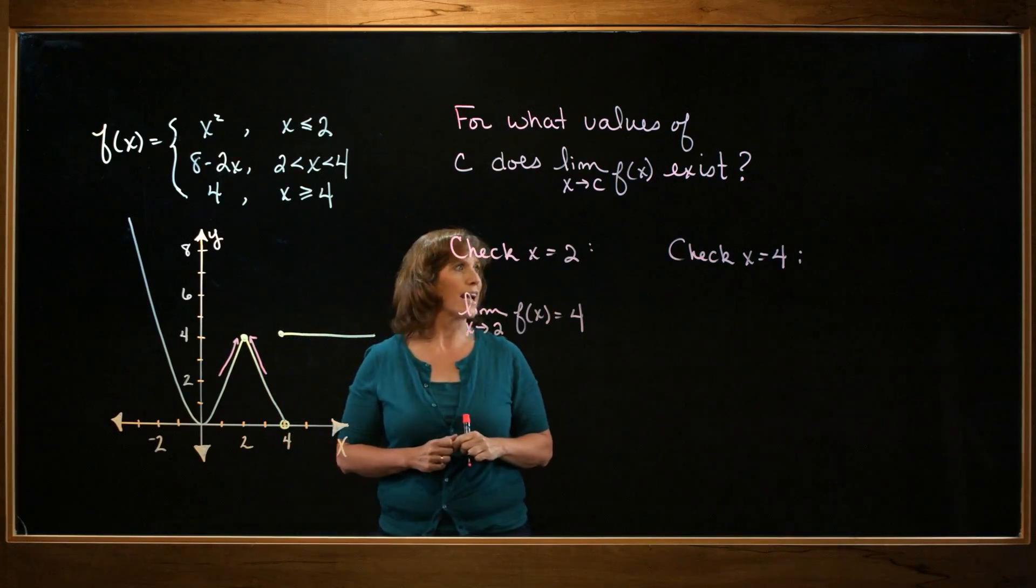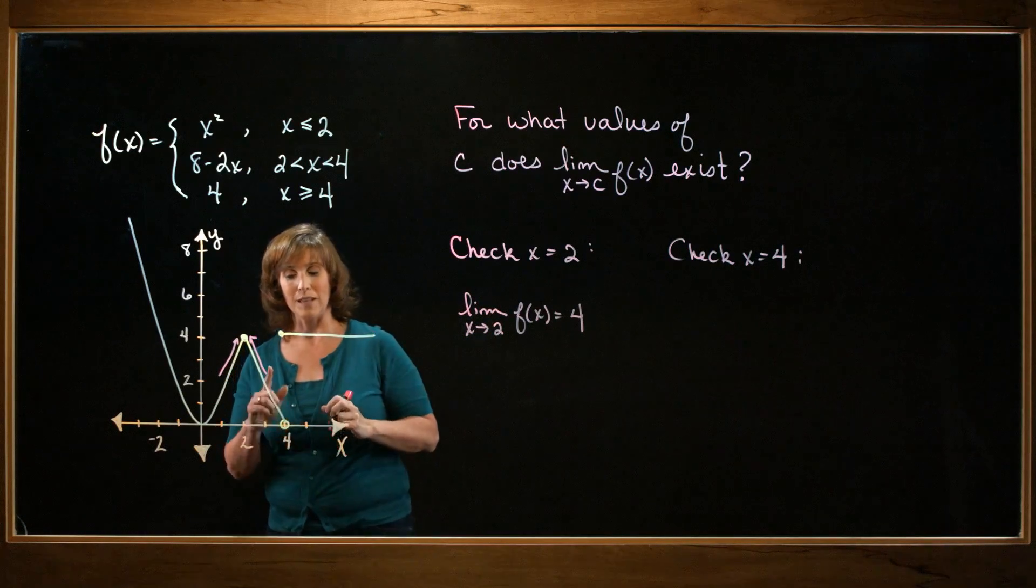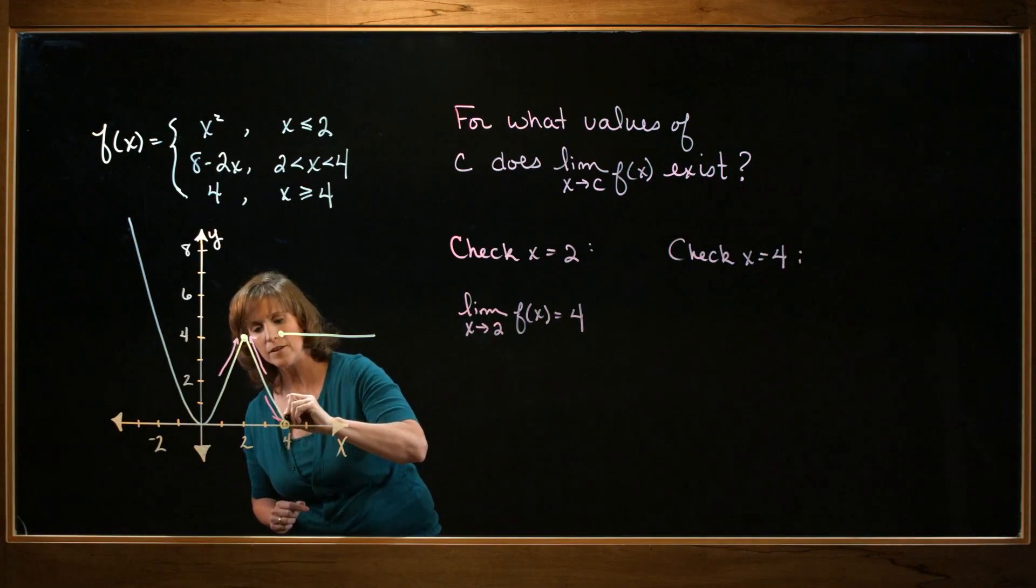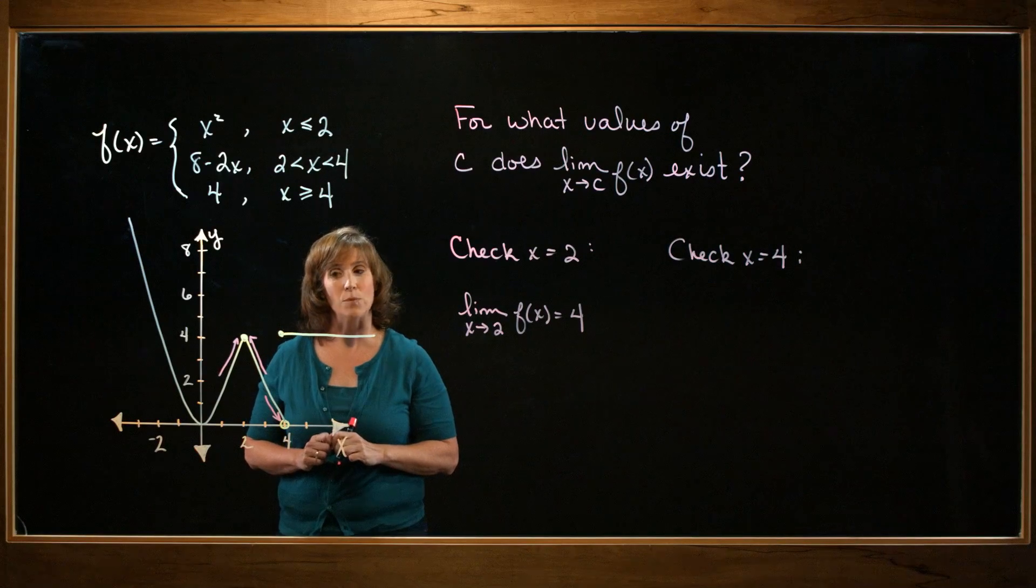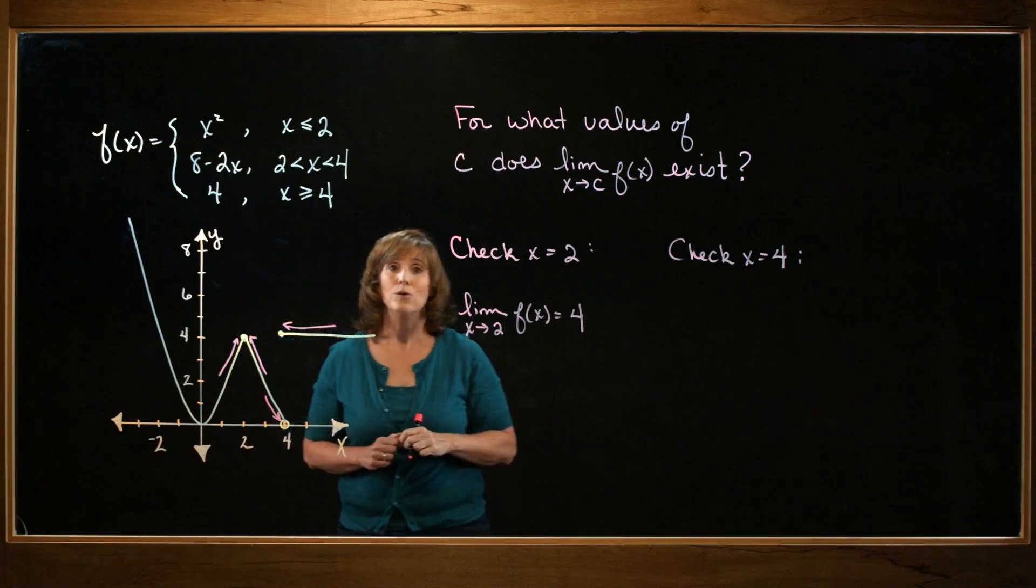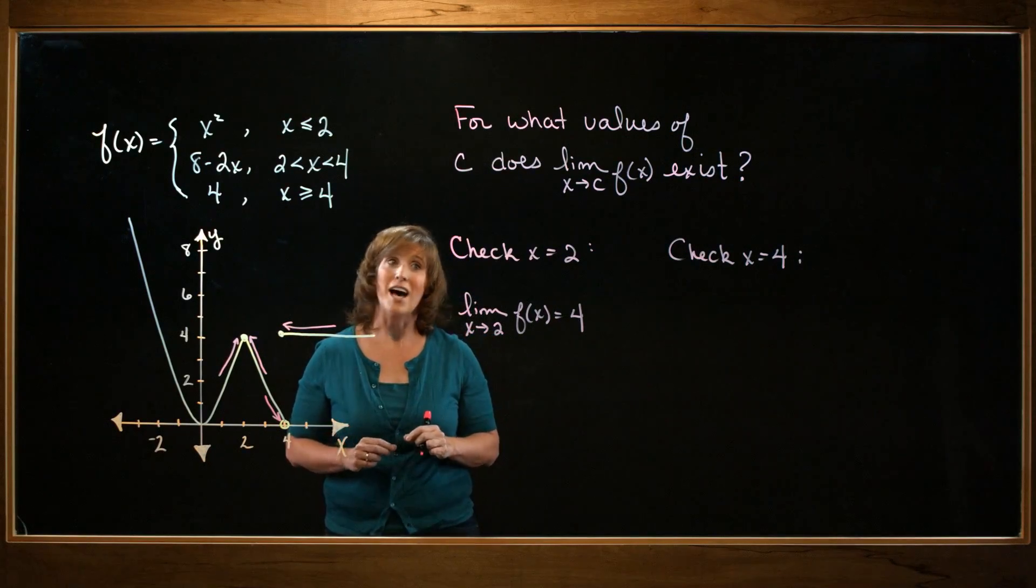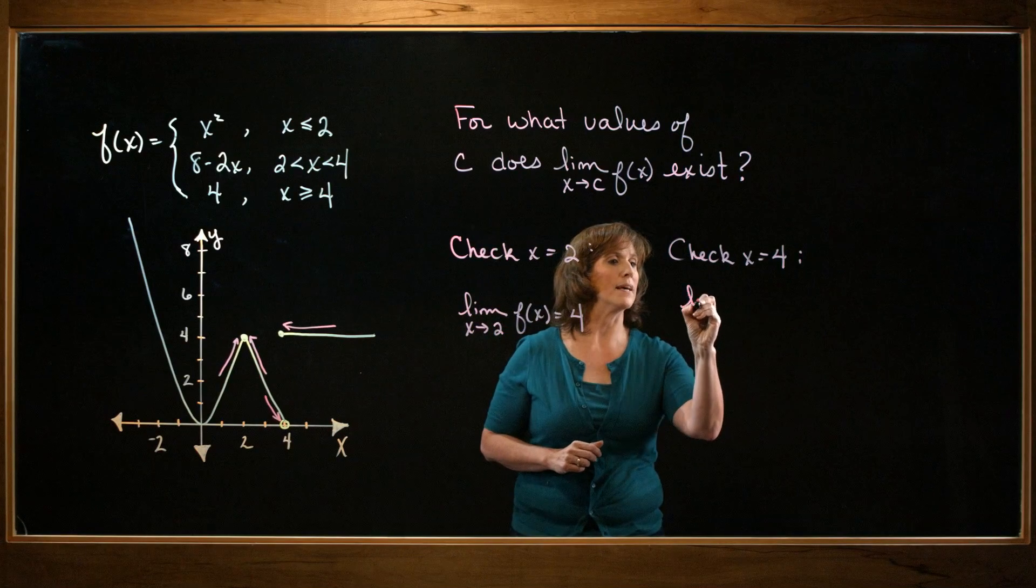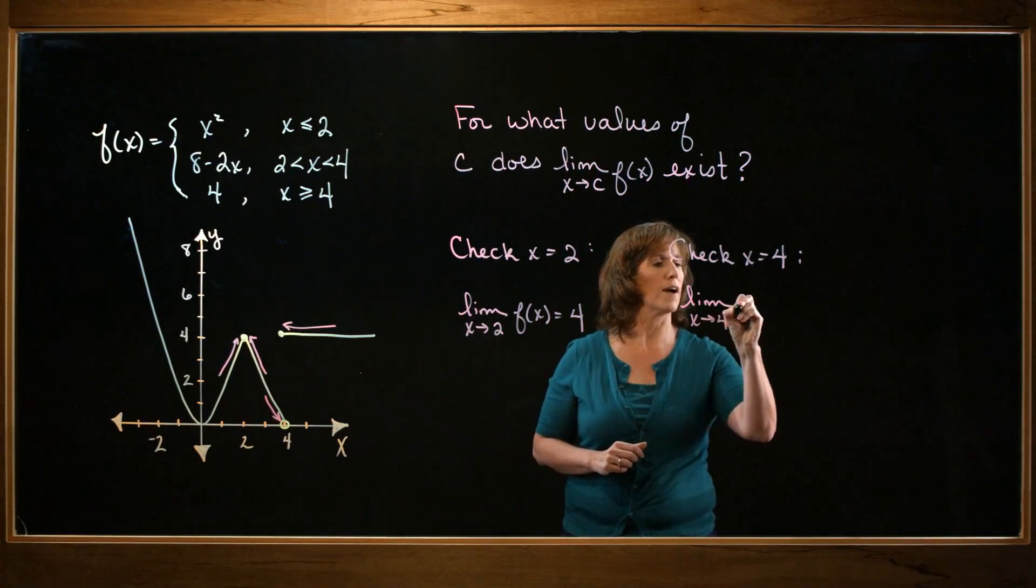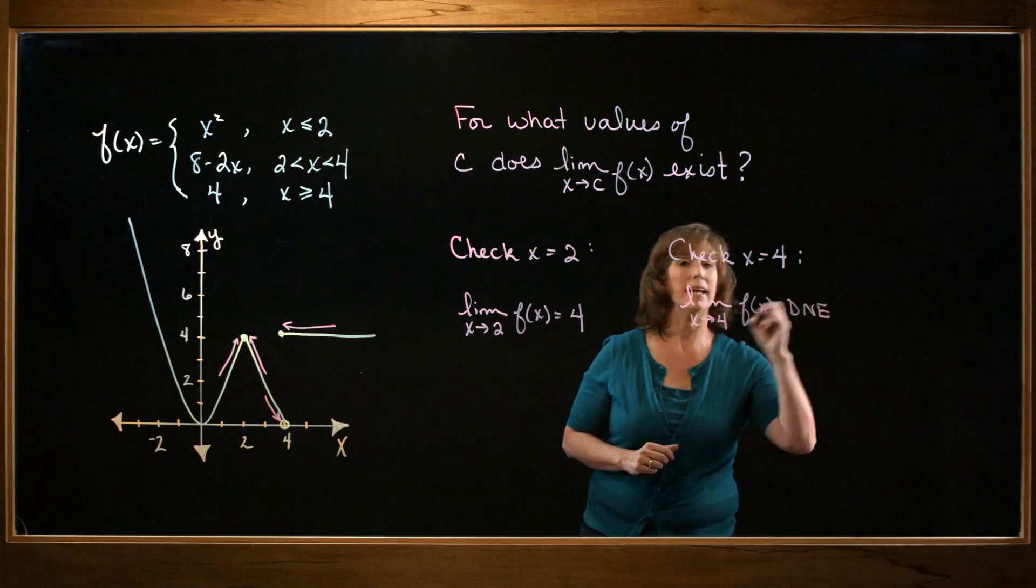Okay, let's check out what happens when x equals 4. As I approach from the left-hand side, my function value is getting closer and closer to 0. As I approach from the right-hand side, it's getting closer and closer to 4. They don't match. That means that the limit does not exist. So the limit as x approaches 4 of f of x does not exist.